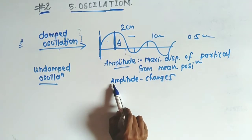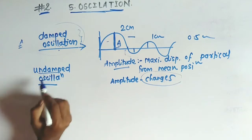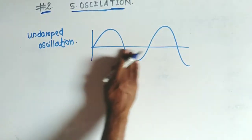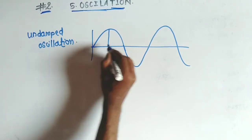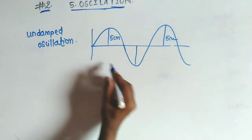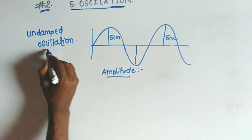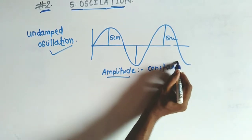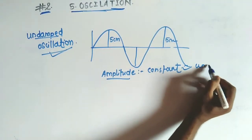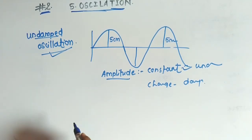In the case of damped oscillation, the amplitude changes — it may vary from place to place. For undamped oscillation, the amplitude remains the same throughout; for example, if amplitude is 5 cm, it stays at 5 cm. So in undamped oscillation, amplitude always remains constant, whereas in damped oscillation, amplitude changes.